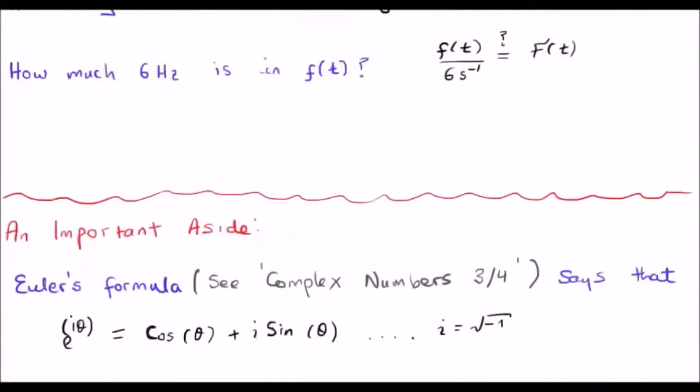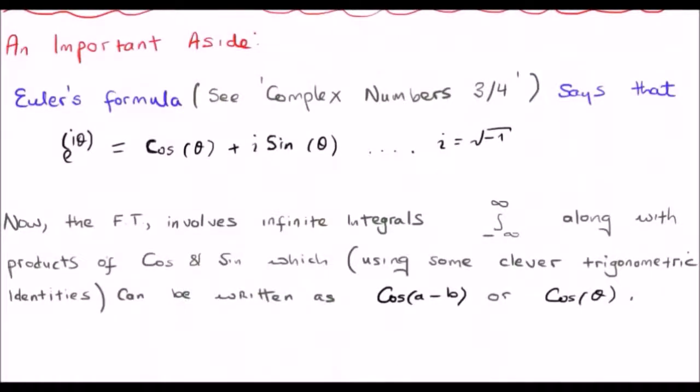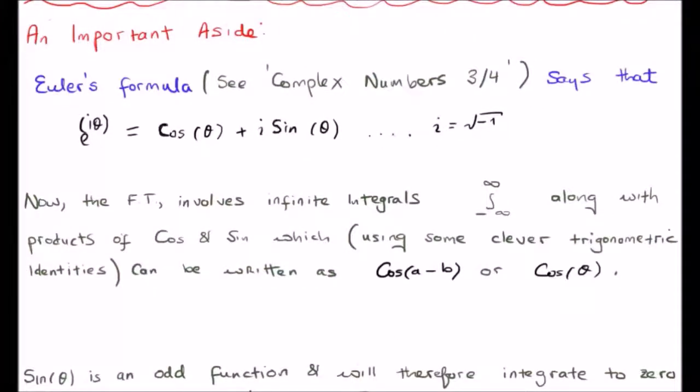Well, before I do that, I must do an important aside, and it's about Euler's formula. In this aside, we will see why in the Fourier transform integrals, it's equivalent to integrate a cosine, a single cosine, and a complex exponential, e to the i theta.